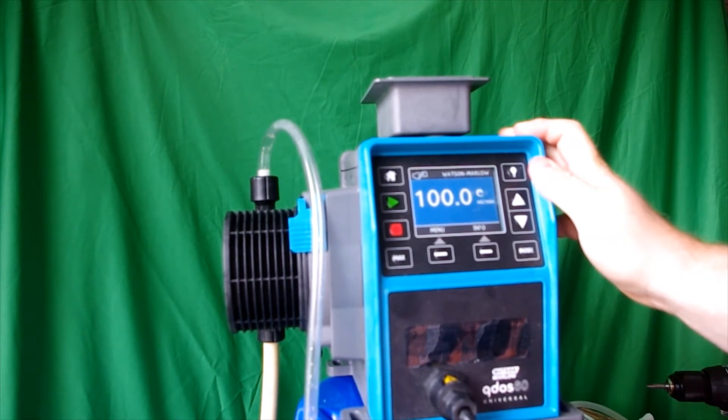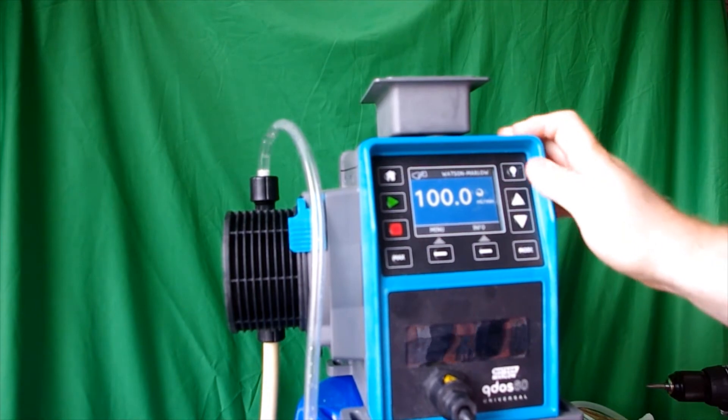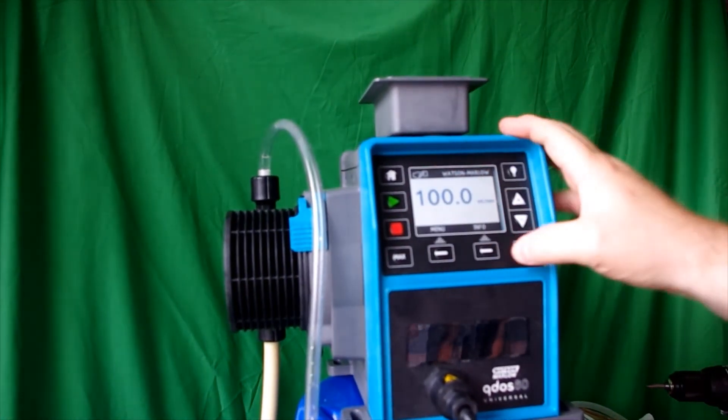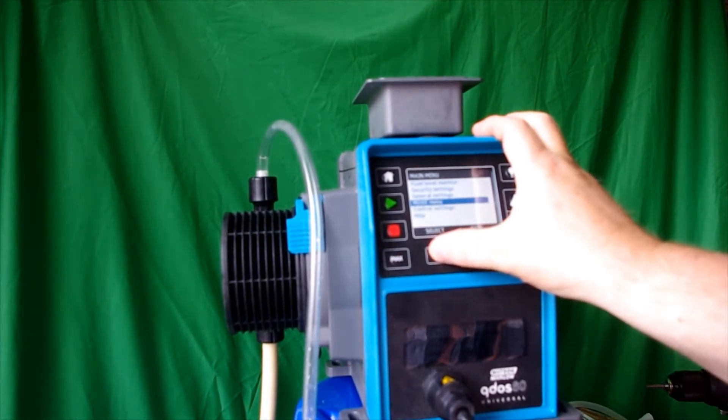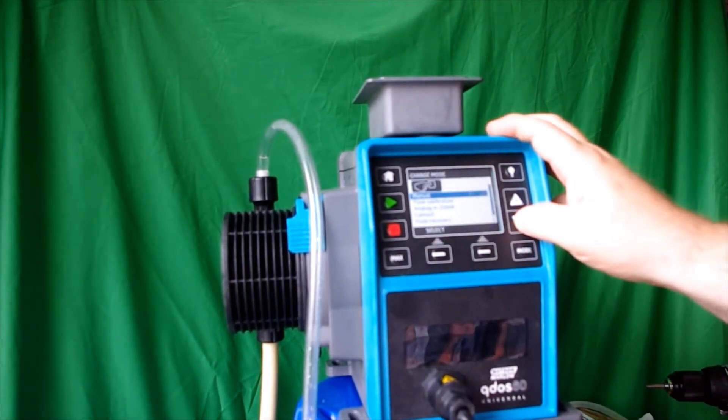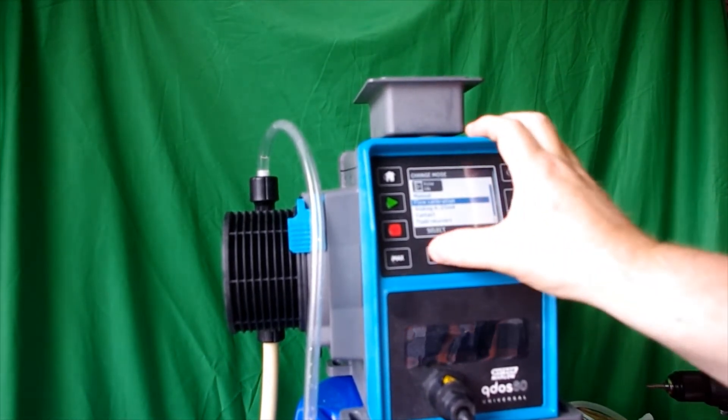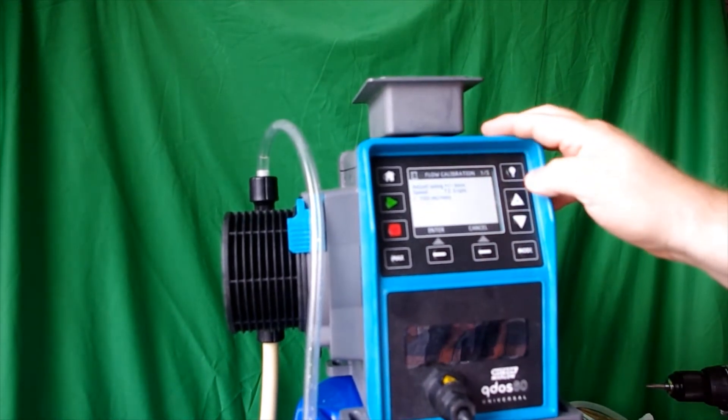Stop your pump, then you want to go into menu, you want to go into mode, you want to go into flow calibration which is the second feature down. Now it says what speed do you want to calibrate the pump. Since we're running around 100 milliliters per minute, we're going to calibrate it at that.